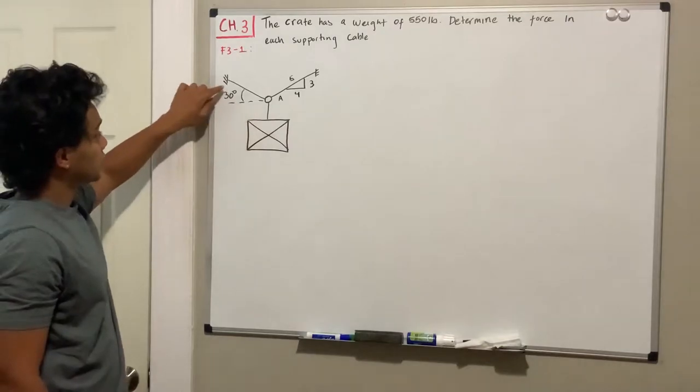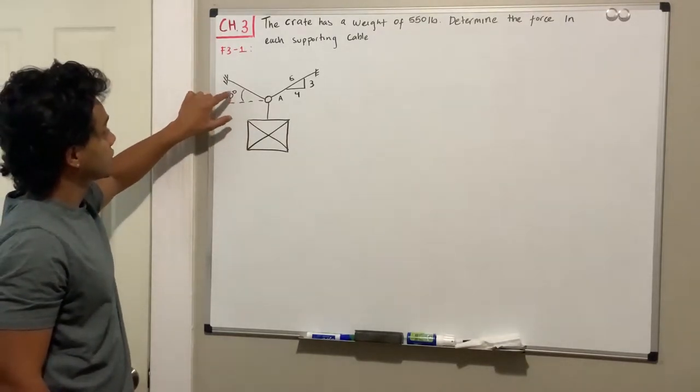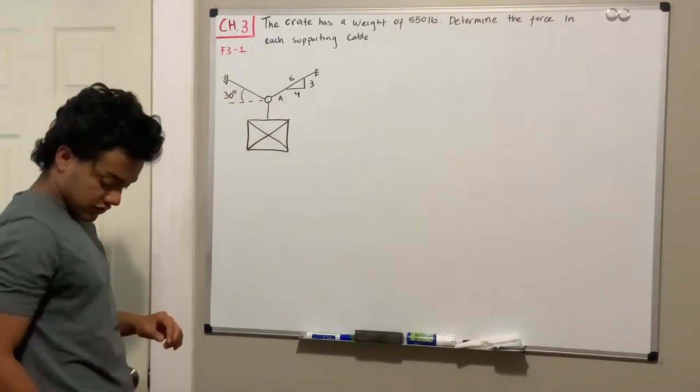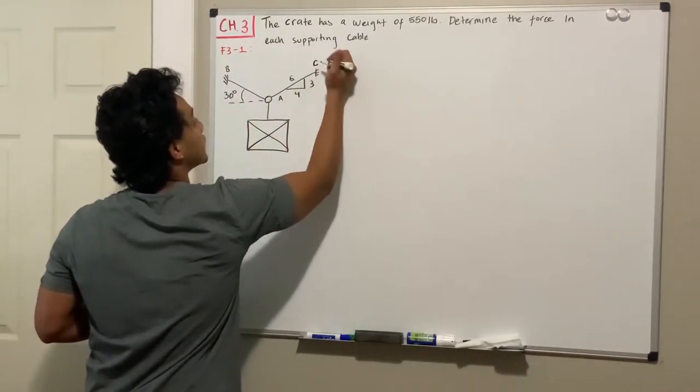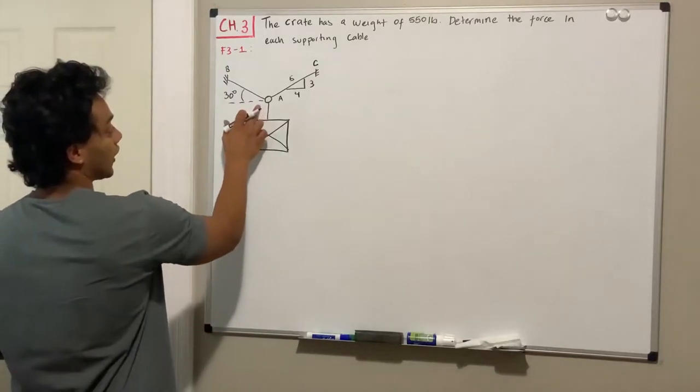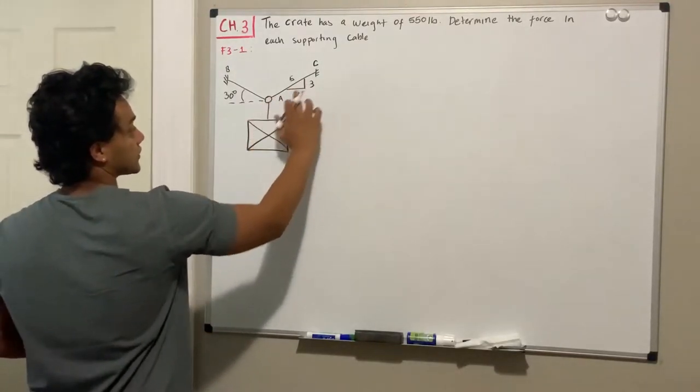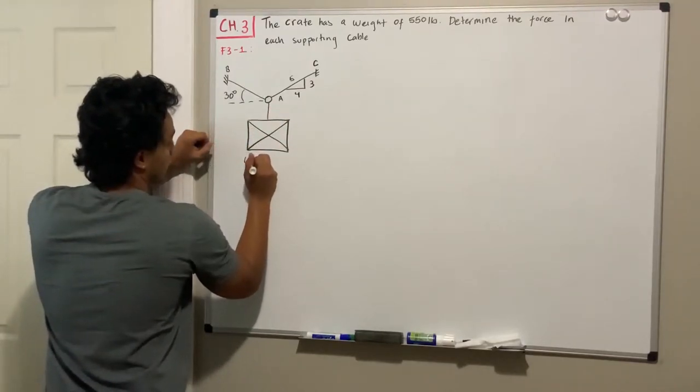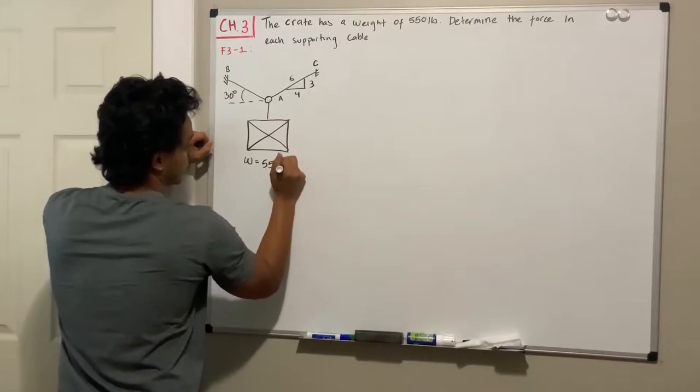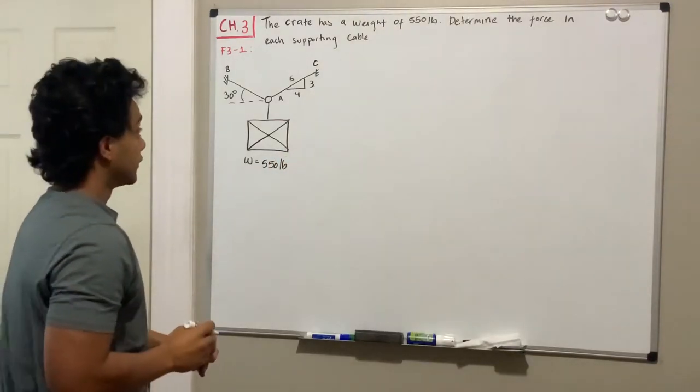So we have this quad that is supported by these two cables. Let's label this cable B and let's label this guy cable A. We have the quad which has these two cables and we have the quad that has a weight of 550 pounds, obviously going down.